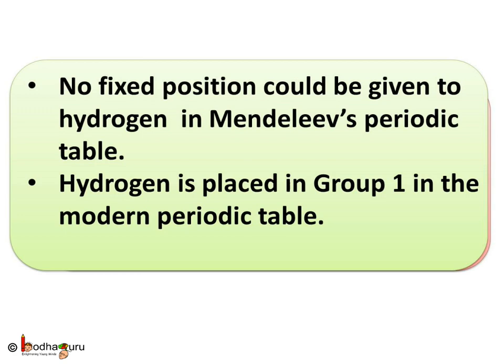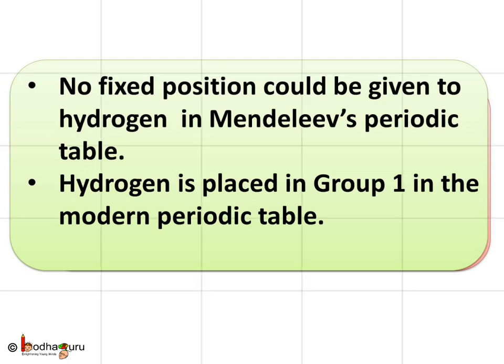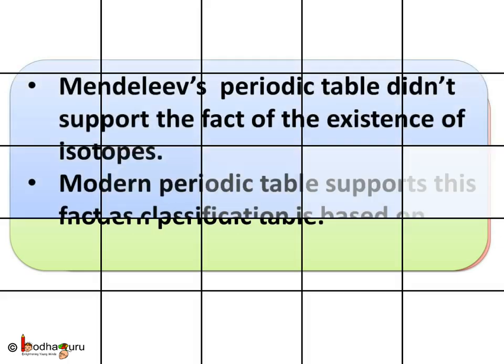Regarding the position of hydrogen, no fixed position could be given to hydrogen in Mendeleev's periodic table. But hydrogen is placed in Group 1 in the modern periodic table.